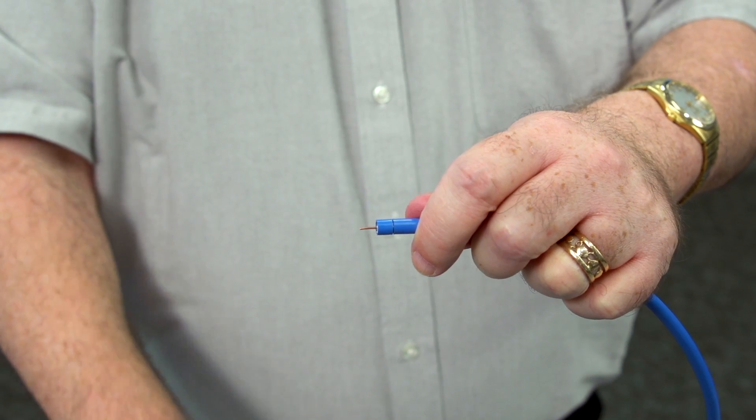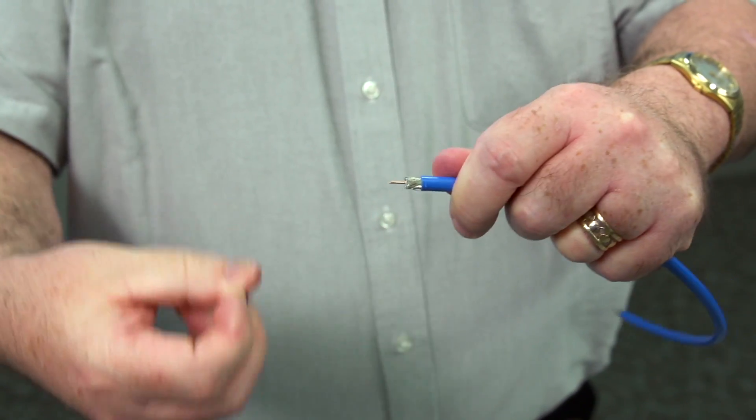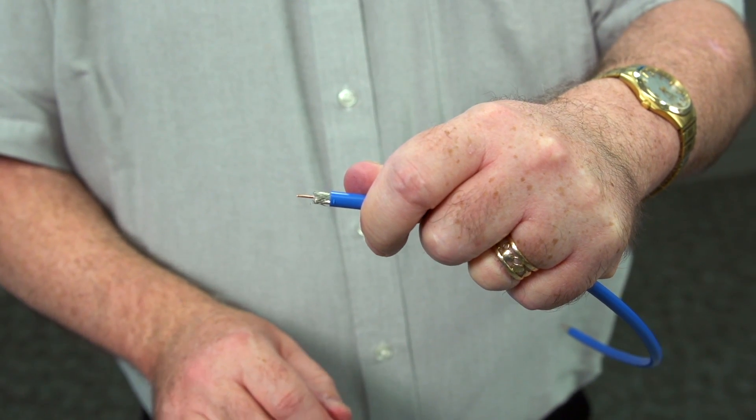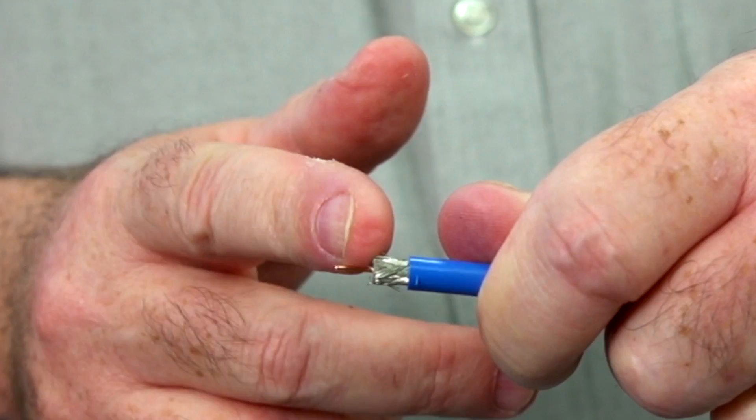There's our center conductor, and there's our shield. Just makes two cuts on this one. Let's fold it back.